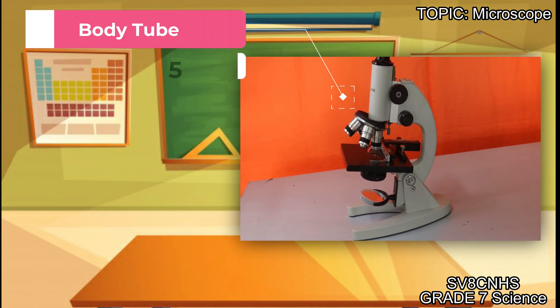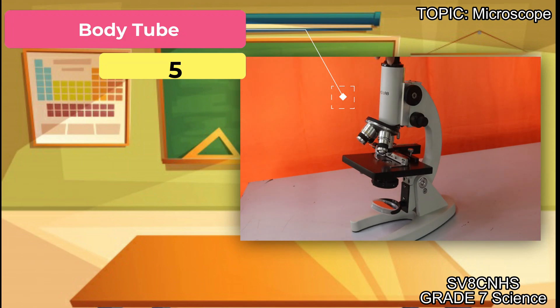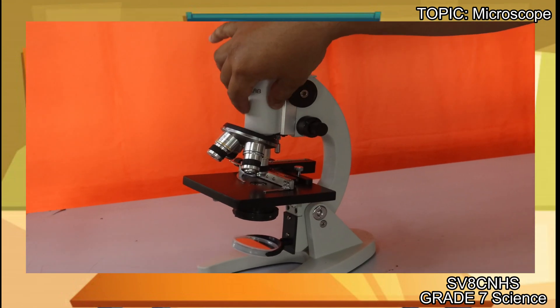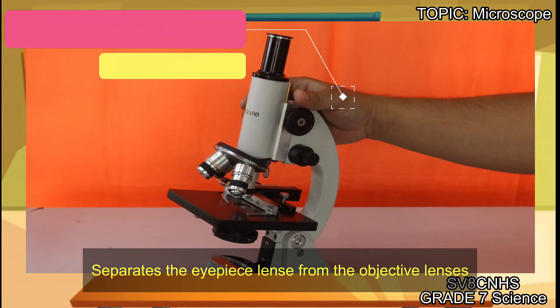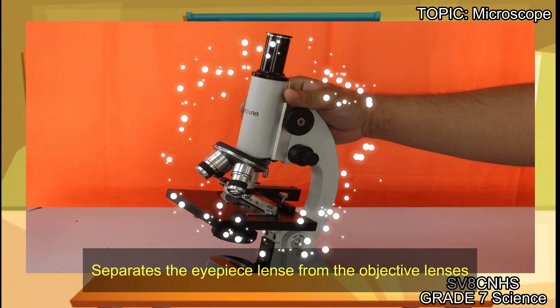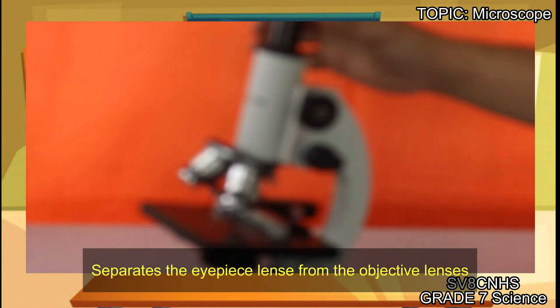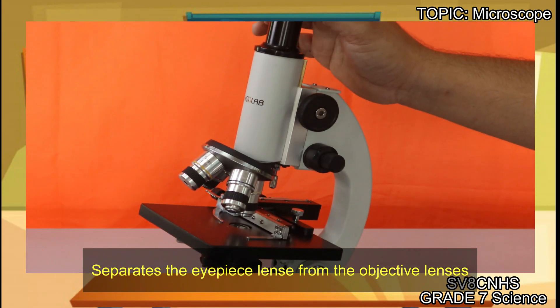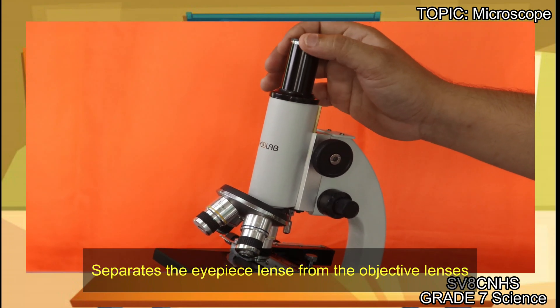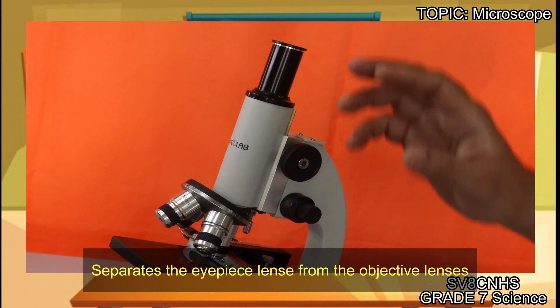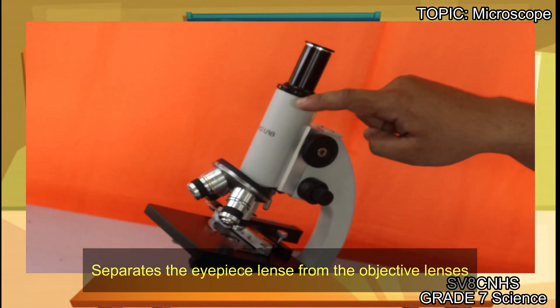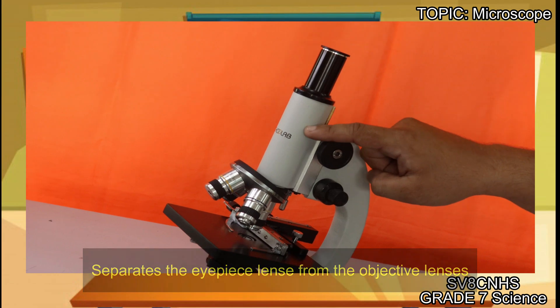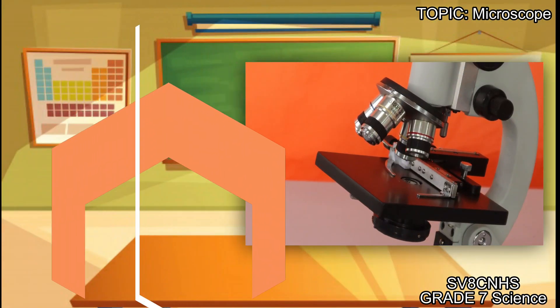Next part is what we call the body tube. This part of our microscope is what we call the body tube. Its function is that it separates the eyepiece lens from the objective lenses. Here is our eyepiece lens, and this is our objective lenses. The part that separates them is what we call the body tube.